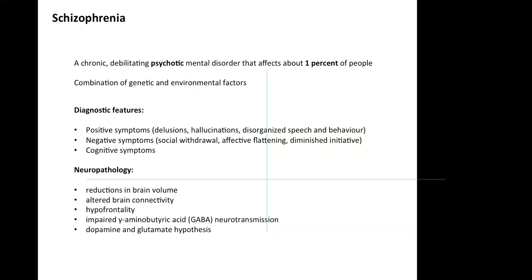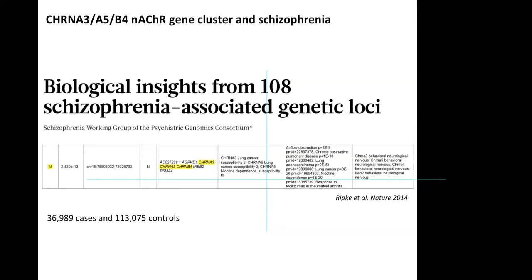The neuropathology of schizophrenia remains obscure; however, advances in neuroimaging, genetic studies, and post-mortem brain studies led to the identification of specific neuropathological hallmarks such as reductions in brain volume, altered brain connectivity, hypofrontality, impaired GABA neurotransmission, and of great importance the dopamine and glutamate hypothesis.